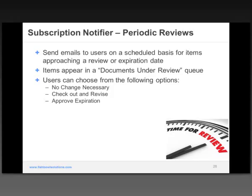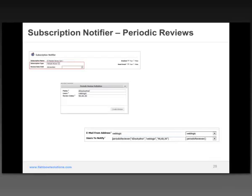Once you go to that interface, you have some actions you can take: set it to no change necessary, check out and revise, or approve expiration. The periodic review configuration allows you to include the fields and names of the people to be notified, and the review dates — the different dates you'd want notifications sent, such as 90 days, 60 days, and 30 days.